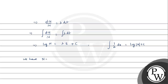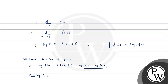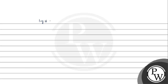Now, we have n equal to n0 at t equals 0. Initially the count of bacteria is n0, so putting t equals 0 and n equals n0, C will be: log n0 equals lambda times 0 plus C, so C equals log n0. Putting C equals log n0 back into the equation gives log n minus log n0 equals lambda t.